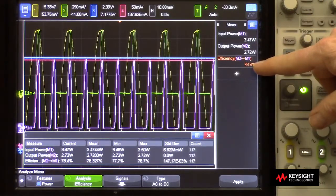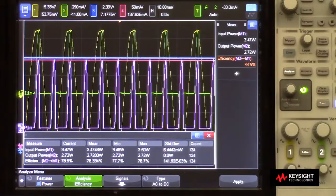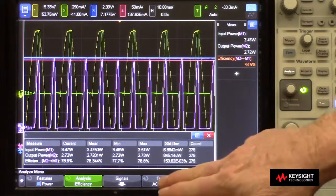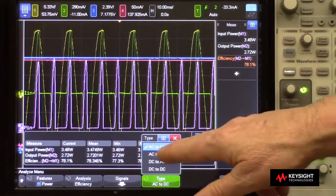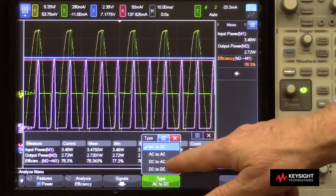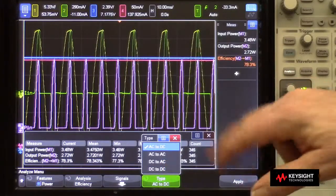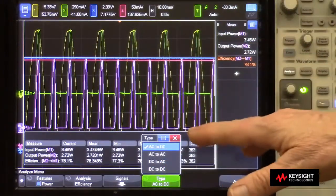Now there are various different types of efficiency you can perform: AC to DC, AC to AC, DC to AC, and DC to DC. We just performed an AC to DC.